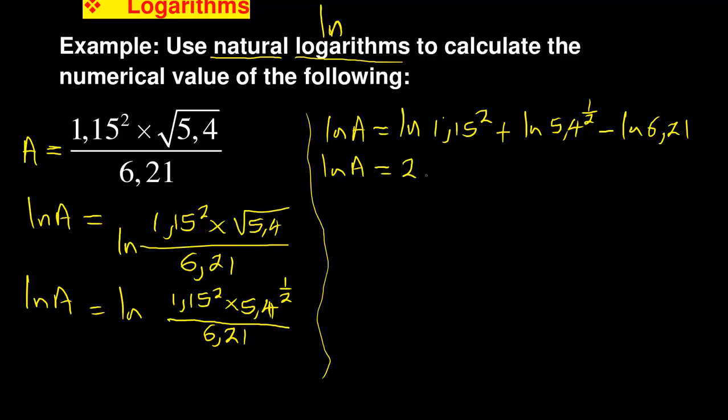You can simplify now. Remember, if it's a power, you drop it down. The power here will drop down before ln, as will the half. That's the laws of logarithms. So it will be 2 ln 1.15 plus 1/2 ln 5.4 minus ln 6.21.